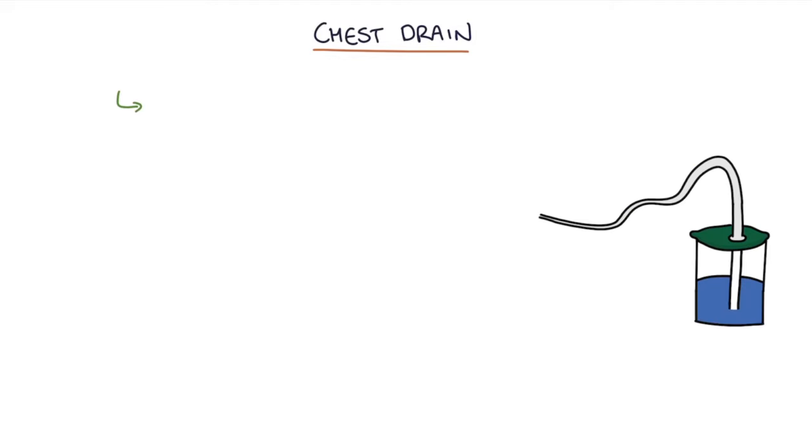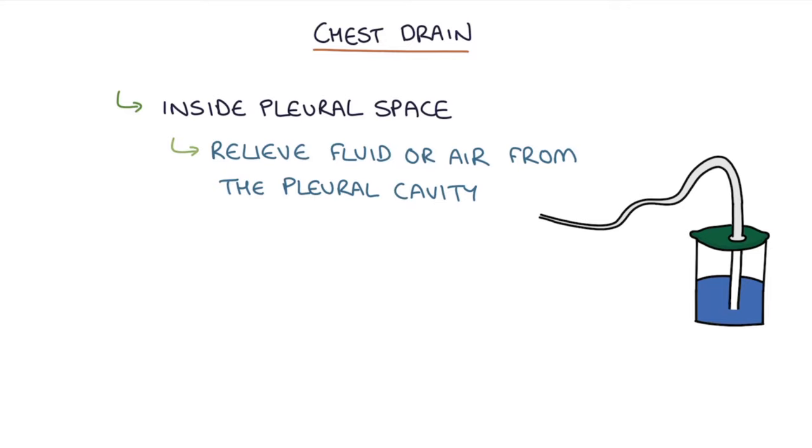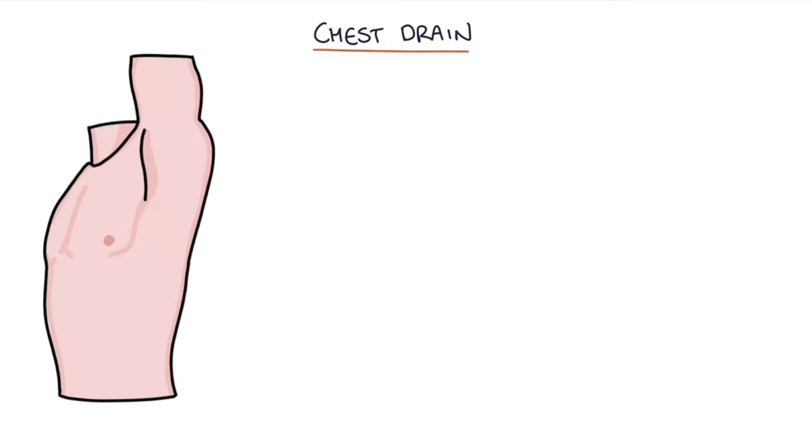So that brings us to talking briefly about a chest drain. Chest drains are tubes that are put inside the pleural space to relieve fluid or air from the pleural cavity. Chest drains are inserted into something called the triangle of safety, called that because when you put the chest drain into this area you're least likely to damage local structures.